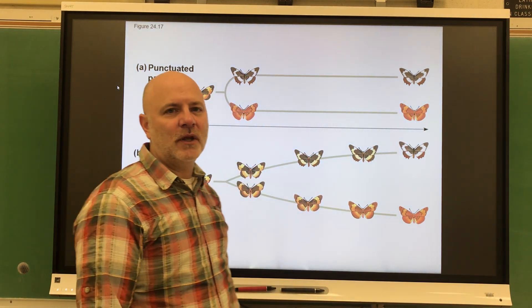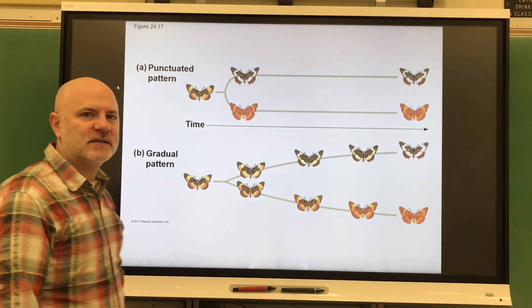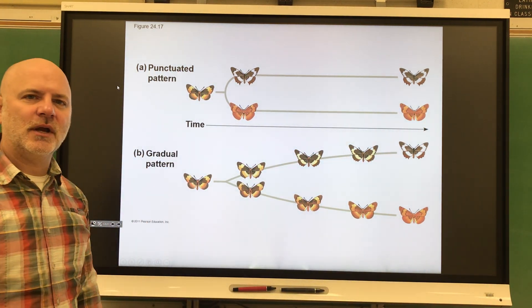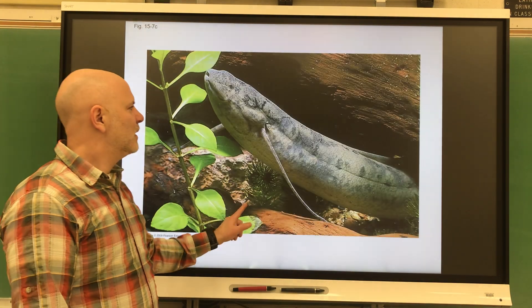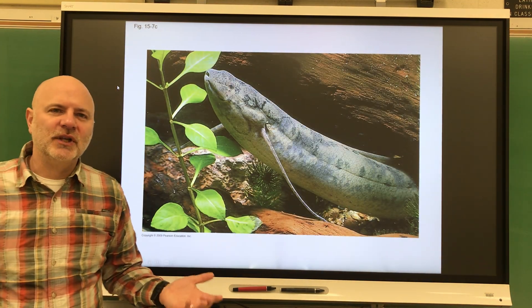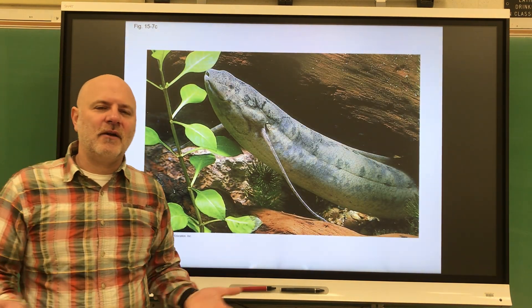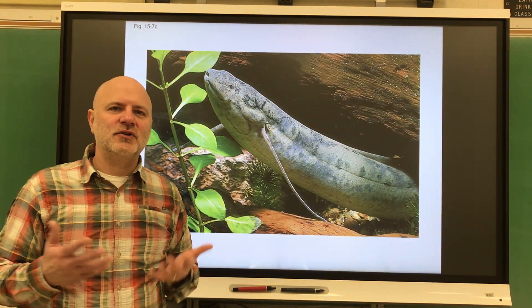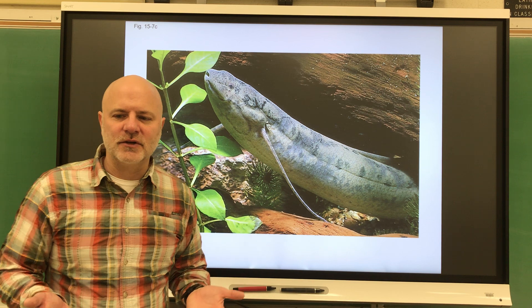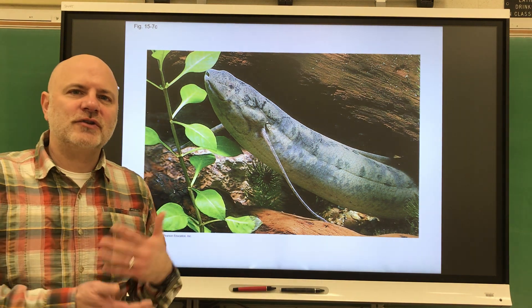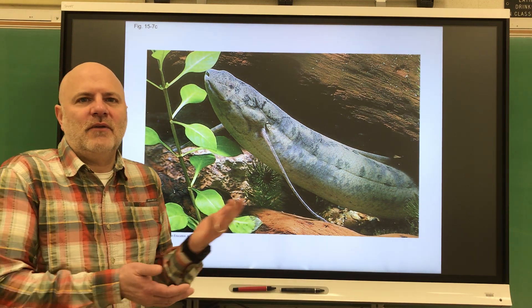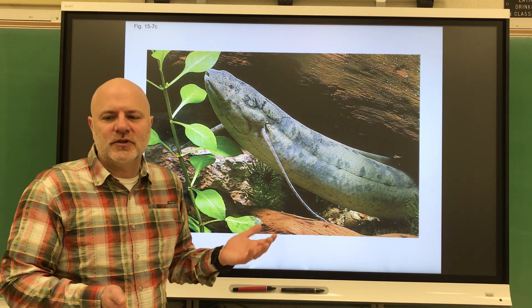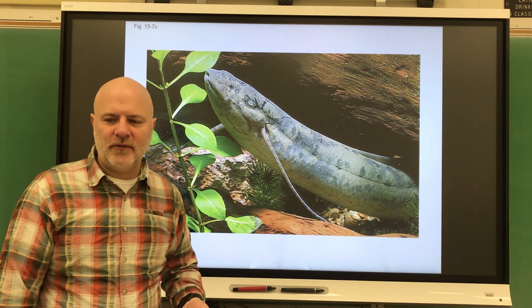If the environment doesn't change much over time, then you aren't going to see much change occurring in those populations. Lung fish are pretty much living in the same kind of environments they did 250 million years ago, so there's no reason for them to evolve out of the traits that they have.